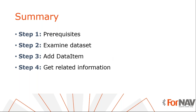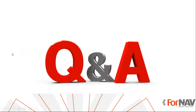Let's recap what we just did. First, we inspected the data set to see how item attributes are connected to items, and found the invisible item attribute value mapping table that makes this connection. Next, we added the item attribute value mapping as a data item in our report. We used the ForNav built-in field lookup to get the item attribute name, and finally configured a record to get the item attribute value.